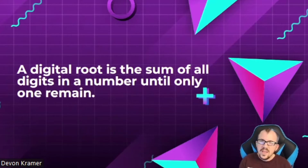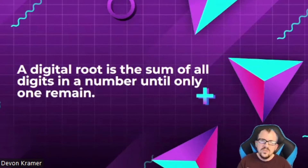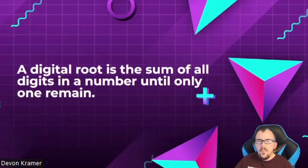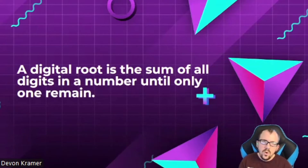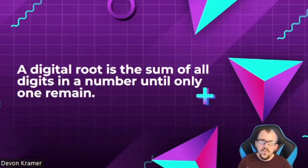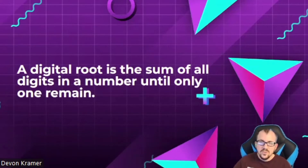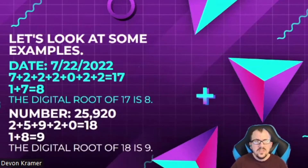Just understanding that logic: if you're at 10, one plus zero is still going to take you back to one. If you're at 11, one plus one is going to take you back to two. If you're at 22, two plus two is going to take you back to four. So no matter how big the number gets, you can always reduce it down to one singular digit — one through nine. That is the understanding of a digital root.